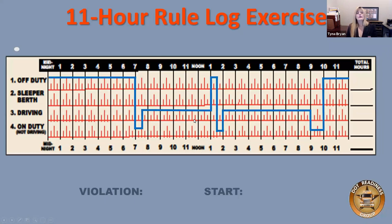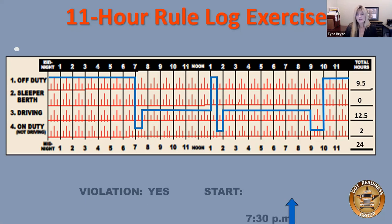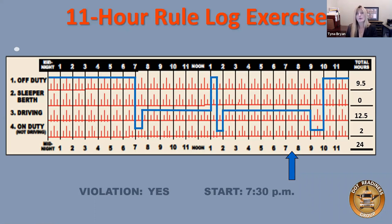Another example: driver off-duty until 7 a.m., goes on-duty not driving, then driving, takes 30-minute break, goes driving again. The totals show: 9.5 hours off-duty, 0 sleeper berth, 12.5 hours driving, 2 hours on-duty not driving. For general purposes, yes, this is a violation. The violation starts at 7:30 p.m. because that's when the 11th hour occurred. It doesn't mean the driver can't be working — it just means the driver can't drive a commercial motor vehicle anymore.